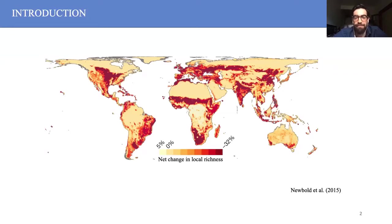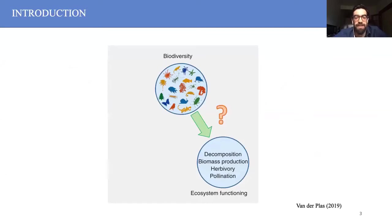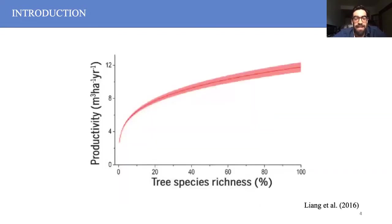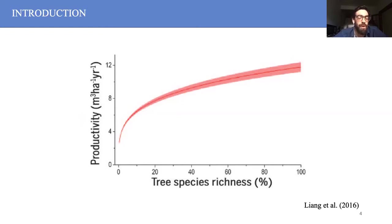As you know, in recent times global biodiversity has declined at alarming rates. This situation led ecologists to wonder whether biodiversity loss might have an impact on ecosystem functioning. During the last three decades, analyzing the relationships between biodiversity and ecosystem functioning has become very relevant in ecology. In forest ecosystems, hundreds of studies have led to the general consensus that more diversity promotes higher levels of productivity.